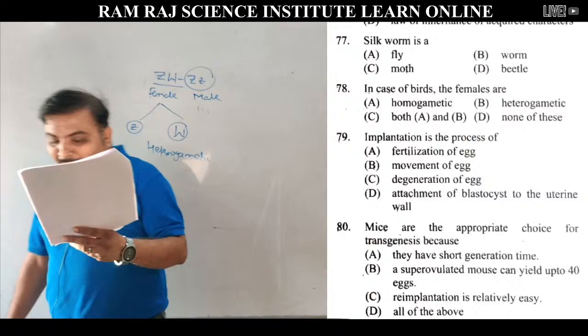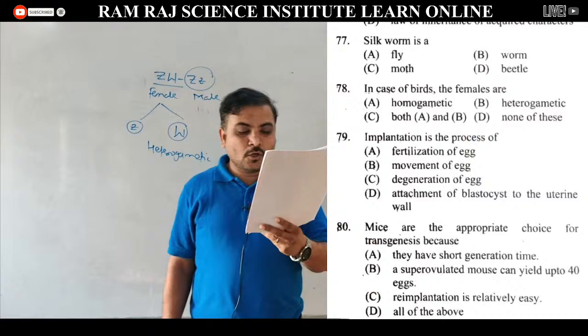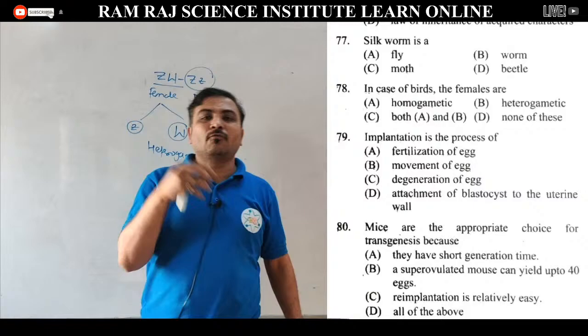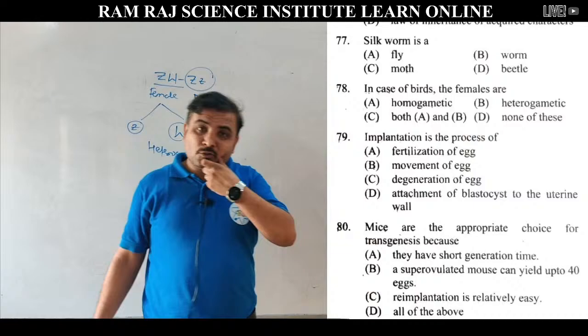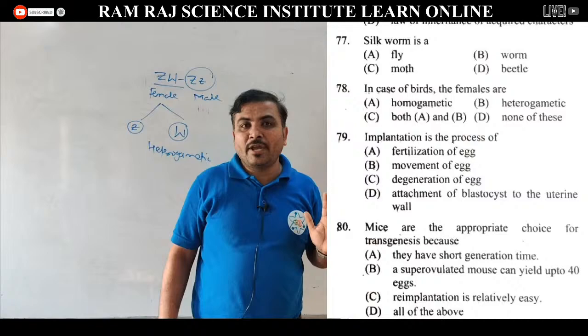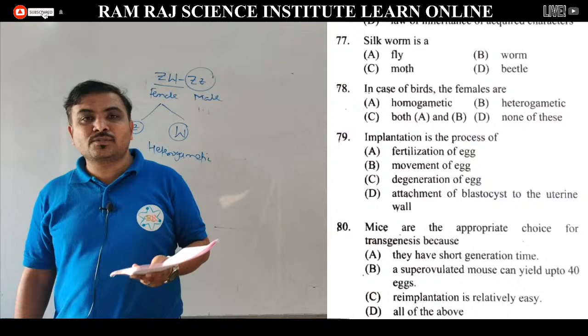Question 79: implantation is a process of. Implantation का मतलब है — the attachment of blastula on the inner wall of the uterus (endometrium). यह fertilization के approximately 6th-7th day पर होता है. Options में attachment of blastocyst to the uterine wall सही answer है — option D.